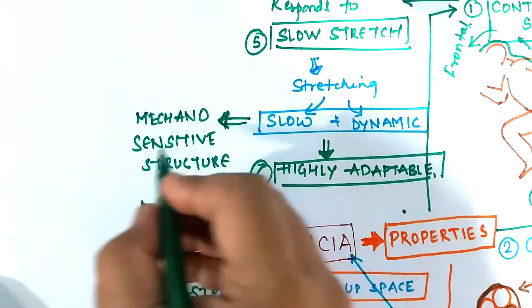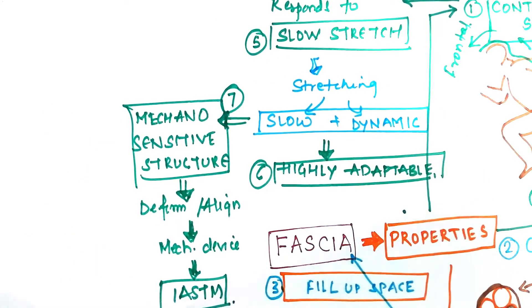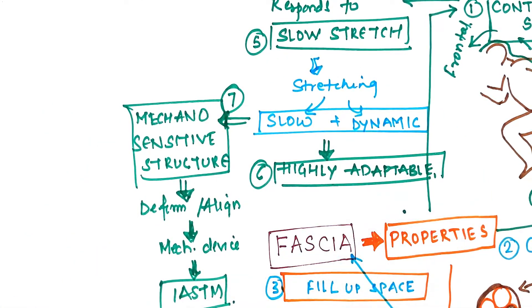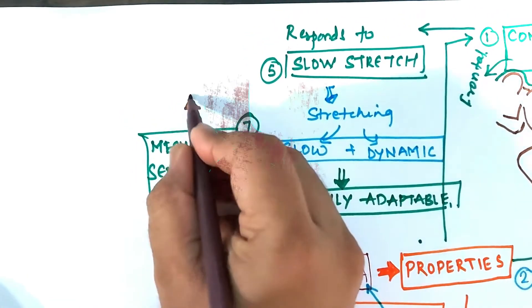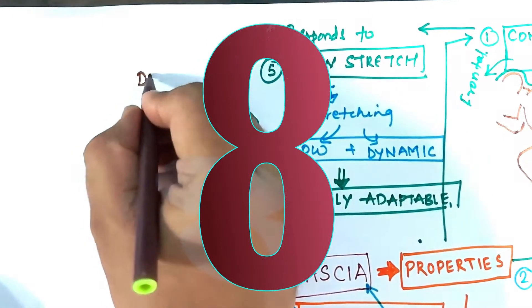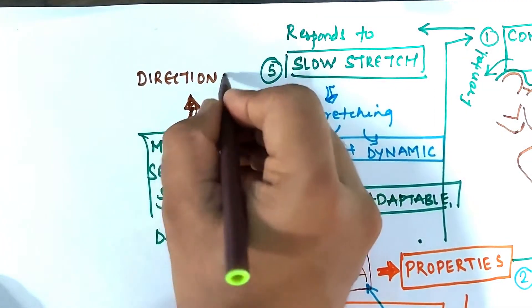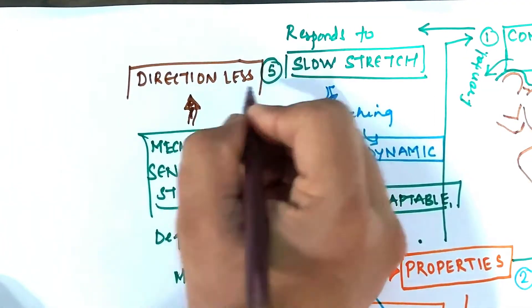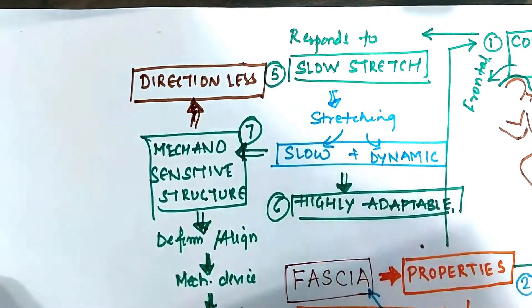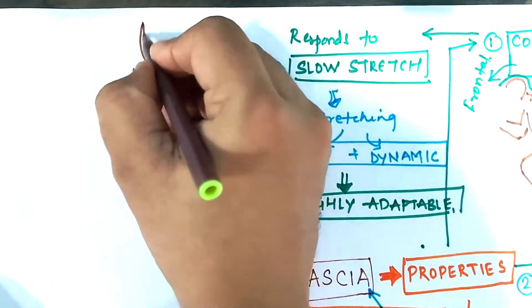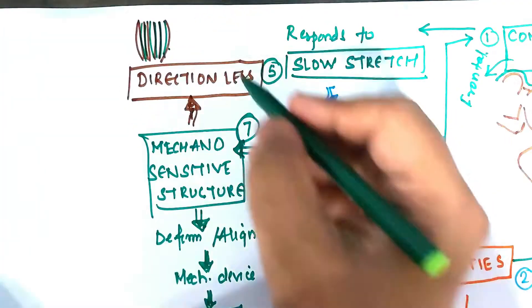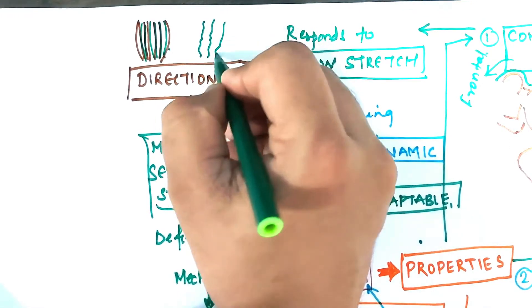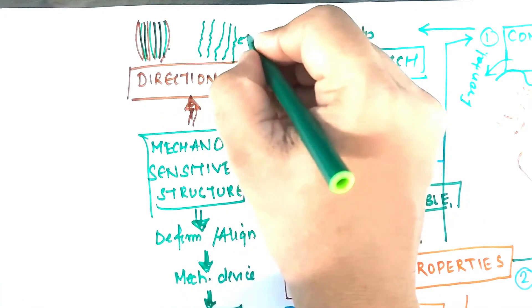Like muscle has its orientation from origin to insertion, fascia does not have any form of orientation. It is a directionless structure. So whichever form you want to mold this structure, fascia being highly adaptable, it will adapt to that particular new position or stretch.